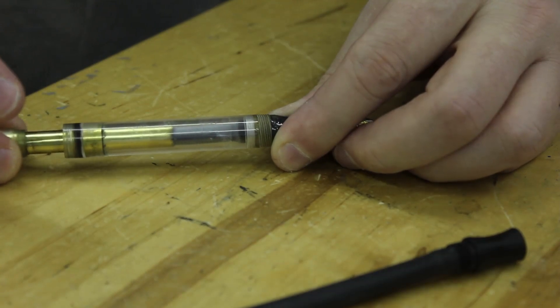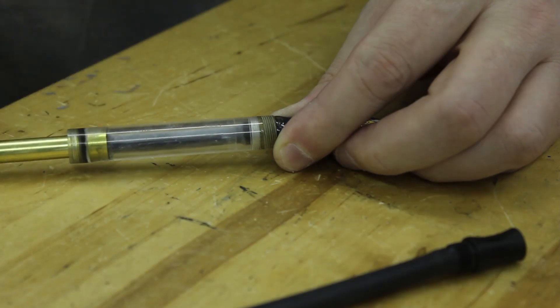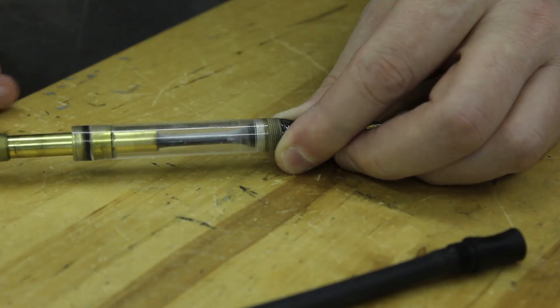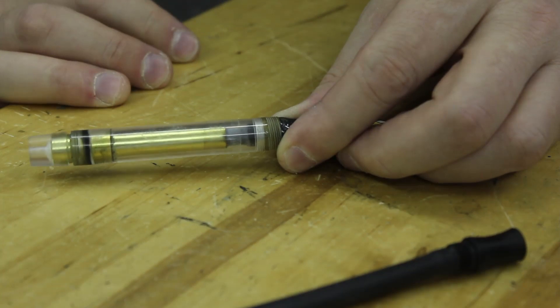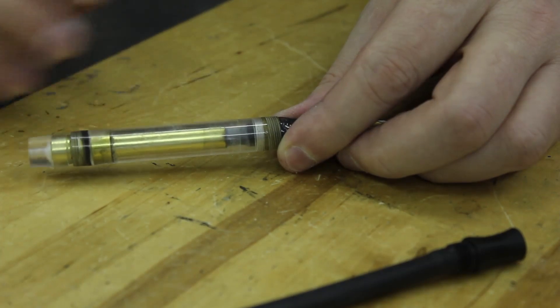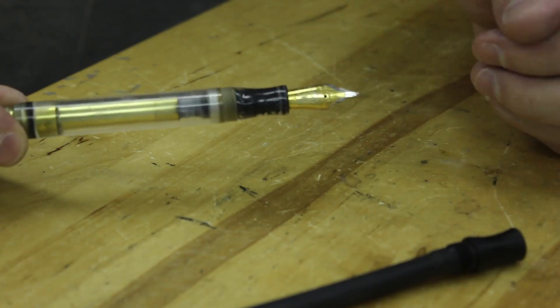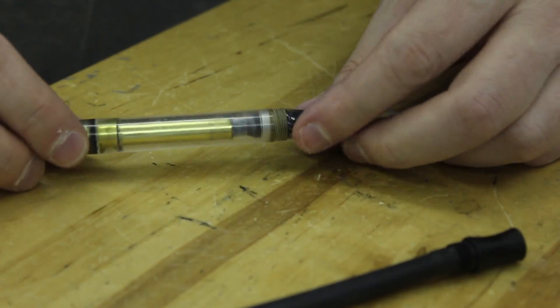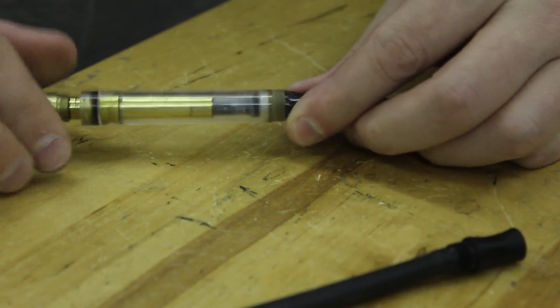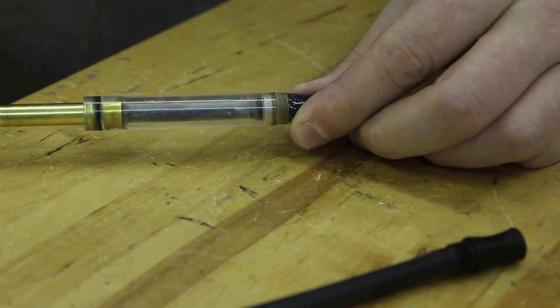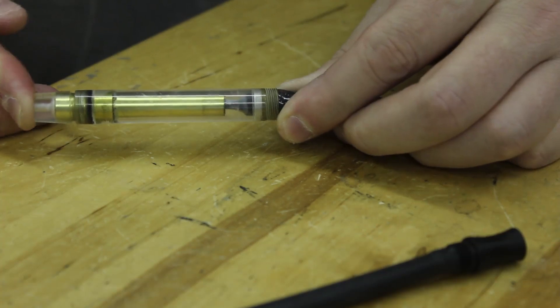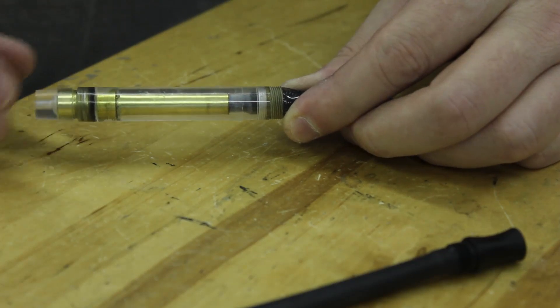So, whereas a lever filler of this size might have an ink capacity of, let's say, I don't know, 0.7, 0.8, 0.9 milliliters, this has an ink capacity of 1.25 milliliters. What does that mean? That's almost triple what a converter would offer you.